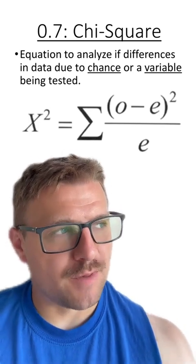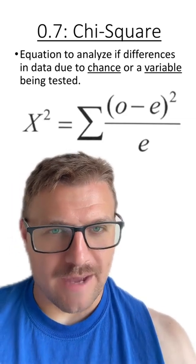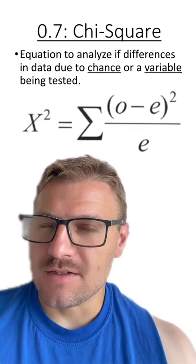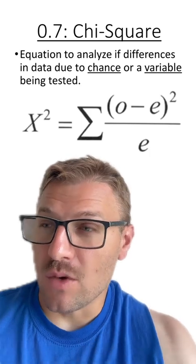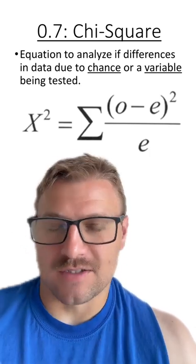For an experiment, we can have expected results - this should happen. However, we get the observed results. This equation looks at and compares the observed, what we see and what we take the data from, with what we expect to see.